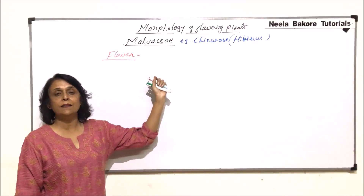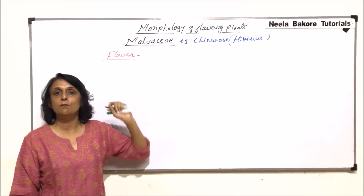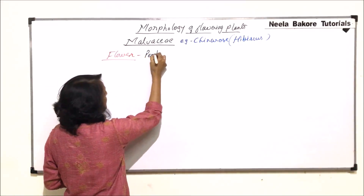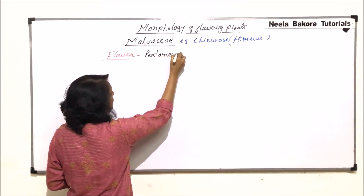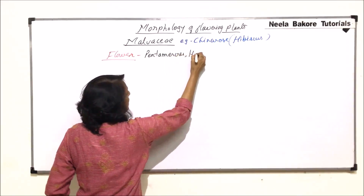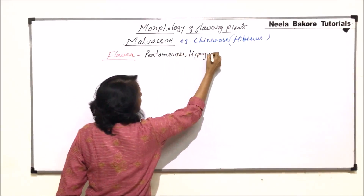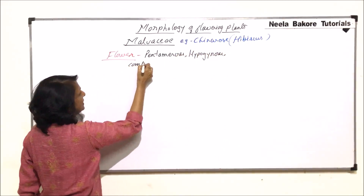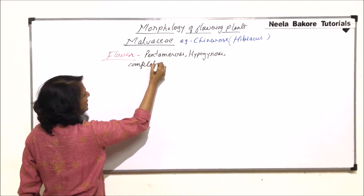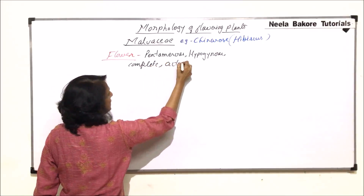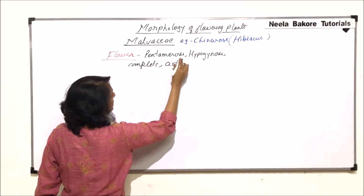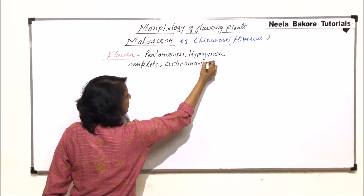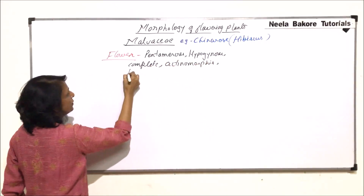I'm going to write certain words describing this flower and then we'll understand the meaning of all these words. The flower is pentamerous, hypogynous, complete, actinomorphic, and hermaphrodite.